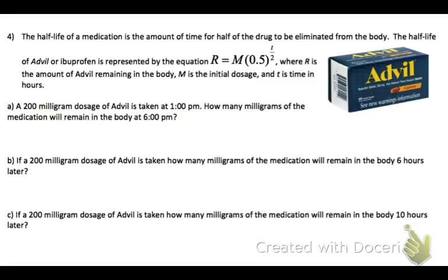Those are going to be important things to look back at. So we start off with a 200 milligram dosage of Advil is taken at 1 o'clock. How many milligrams remains in the body at 6 p.m.? So I'm saying how many milligrams remain. Look back up at your equation and we'll notice that R means how many milligrams remain. So I'm solving for R here.